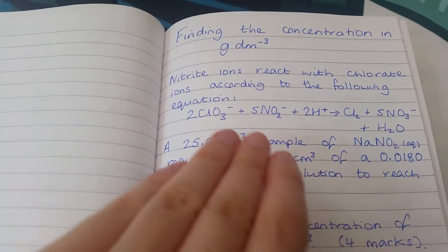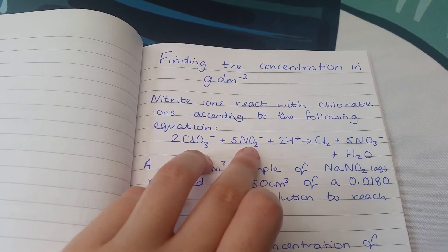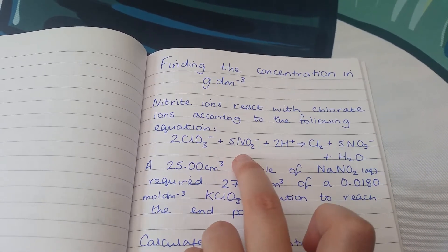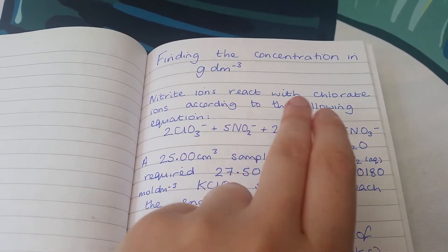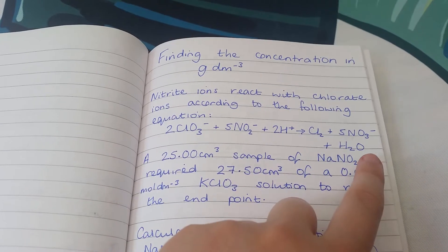The question says nitrite ions. Notice it's slightly different to a nitrate - nitrate is NO3, nitrite is NO2. These nitrite ions react with chlorate ions according to this equation.